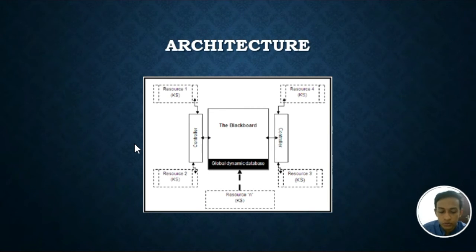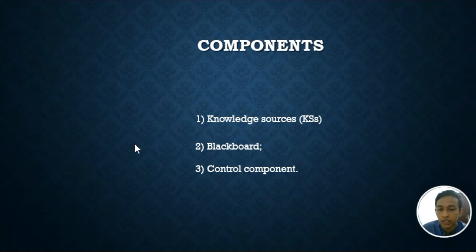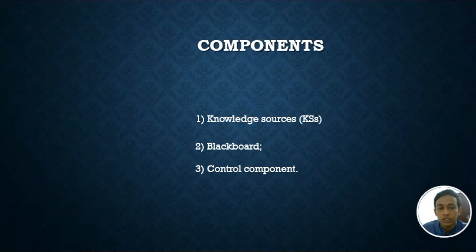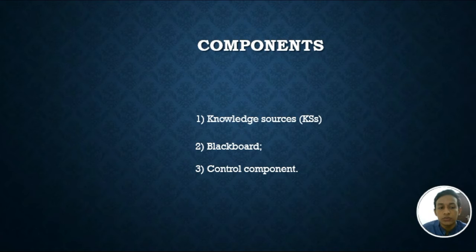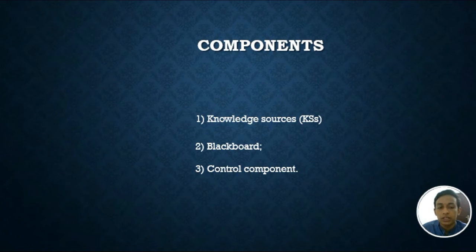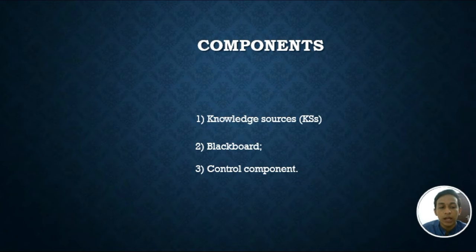Next we move on to the components of blackboard architecture. It contains mainly three components: the knowledge source, the blackboard, and the control component. The knowledge source is a set of separated and independent coded knowledge in the form of procedures and rules. The blackboard is a global data structure containing the problem state and information needed by knowledge sources — including input data, partial solutions, control data, and the final solution. Knowledge sources make changes to the blackboard incrementally, leading to the solution.